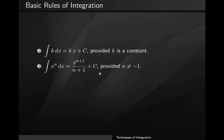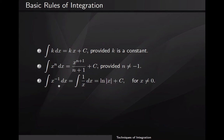What happens if you have negative one in the exponent? The integral of x to the negative one dx — which is the same as one over x dx — equals the natural log of the absolute value of x, for x not equal to zero. This restriction exists because you cannot have division by zero, and the natural log of zero is not a real number.